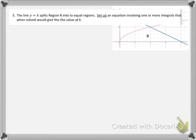In this case, they've told us we're going to split region R into two equal regions, and we're going to do it with a line Y equals K. Well, that means our line must be horizontal, something like I'm drawing here.